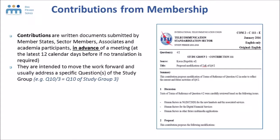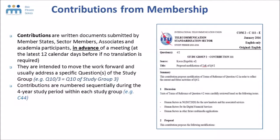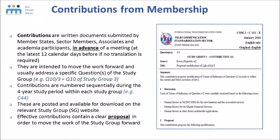Contributions are numbered sequentially during the four-year study period within each study group, so you might have a contribution C44 or even C305.